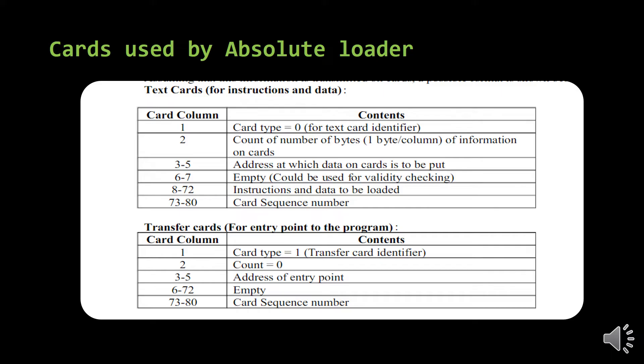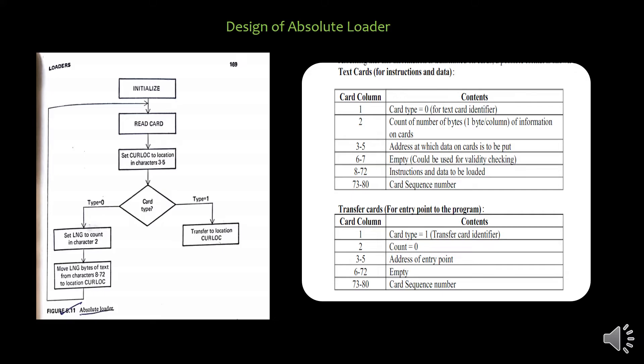Once we understand the cards used by an absolute loader, the next topic is the design of an absolute loader. The loader loads the program into memory with the help of cards provided by the assembler. The first step in designing the absolute loader is to initialize the process and read the card. Once the card is read, the next step is to find out which type of card it is. If it is a transfer card, everything is loaded — now pass control to the new location. If it is a text card, we have to actually load the instruction into that particular memory location.